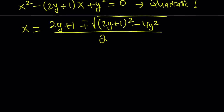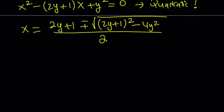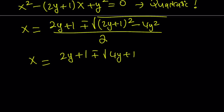Using the quadratic formula, x = [−b ± √(b² − 4ac)] / 2a = [(2y+1) ± √((2y+1)² − 4y²)] / 2. The 4y² terms cancel inside the square root, and we end up with x = [(2y + 1) ± √(4y + 1)] / 2.